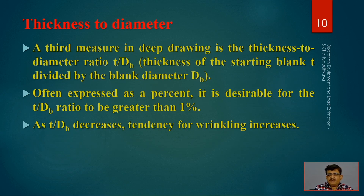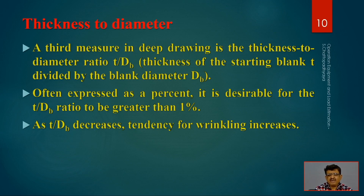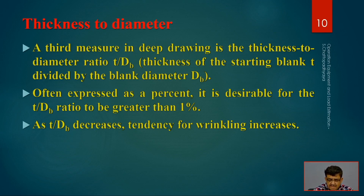The third measure is the thickness-to-diameter ratio (T/DB), often expressed as a percent. It is desirable for the T/DB ratio to be greater than 1%. The thickness T cannot be very thin — it should be at least 1% of the blank diameter. As T/DB decreases, the tendency for wrinkling, creases, and other defects increases. Thicker material is easier to deep draw; otherwise unintended wrinkles and surface tears will appear.